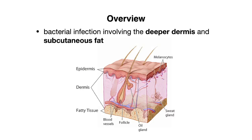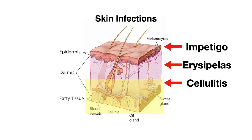Let's start with an overview of cellulitis. Cellulitis is a bacterial infection involving the deeper dermis and subcutaneous fat. When we compare cellulitis with erysipelas and impetigo, we can see that cellulitis is a much deeper infection.